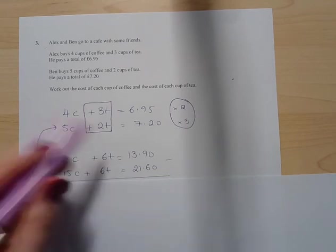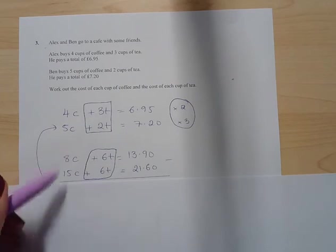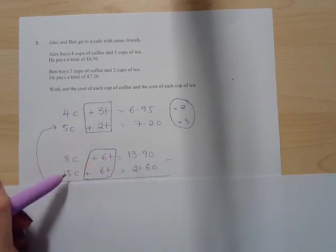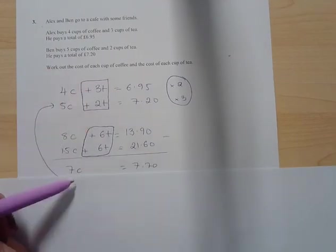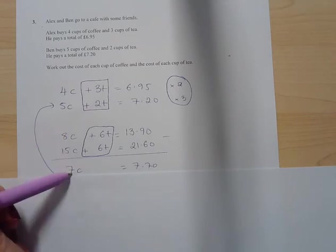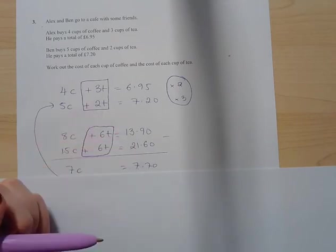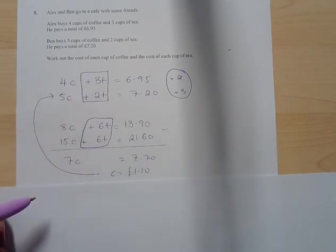So then when I multiplied those equations, I got these two. And then to get rid of my T's, I need to subtract my two equations away from each other. Now I've done this one subtract this one and this one subtract this one. And that's fine to do because I can see that both that and that number are bigger than these ones. So that gives me 7C. So 15C take away 8C gives me 7C, and 2160 take away 1390 gives me 770. Then I divided both sides by 7, so one coffee equals £1.10.